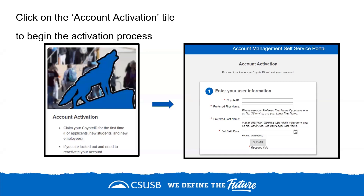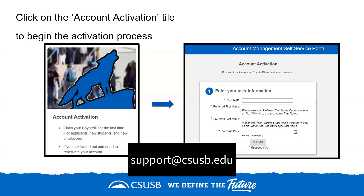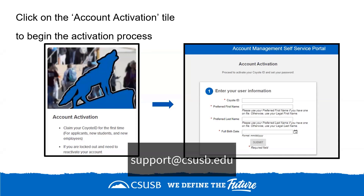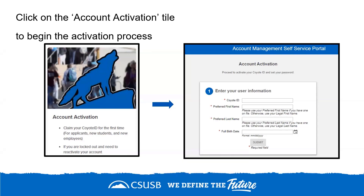If any of the information is incorrect, an error message will be displayed. You can correct the information or follow up with the ITS Technology Support Center for further assistance. After validating your information, your username — which is your Coyote ID — will be displayed on the screen. Click Submit to proceed.